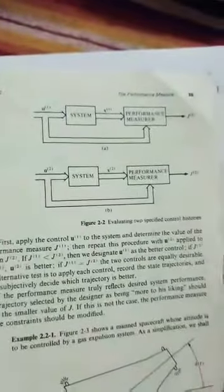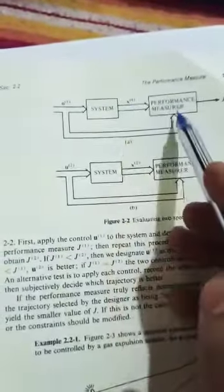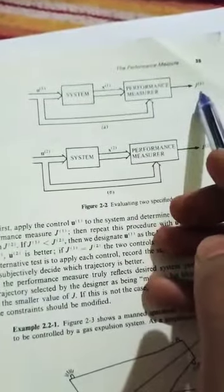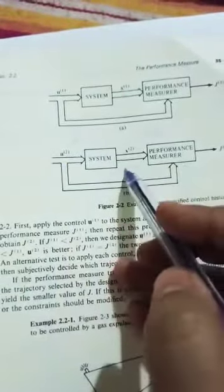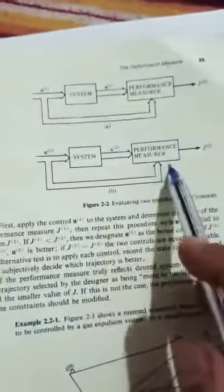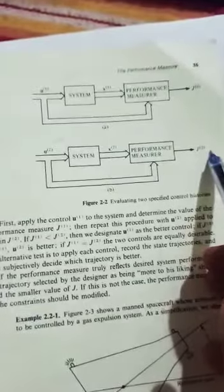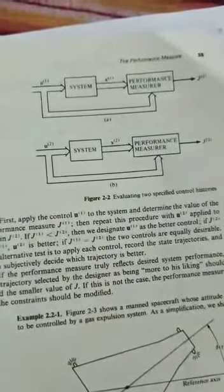In the first block diagram, we consider the first input u1 and the state vector x1. The performance measure output is g1. Now considering a second input u2, we get the state trajectory x2, and the output is the minimized performance measure g2.